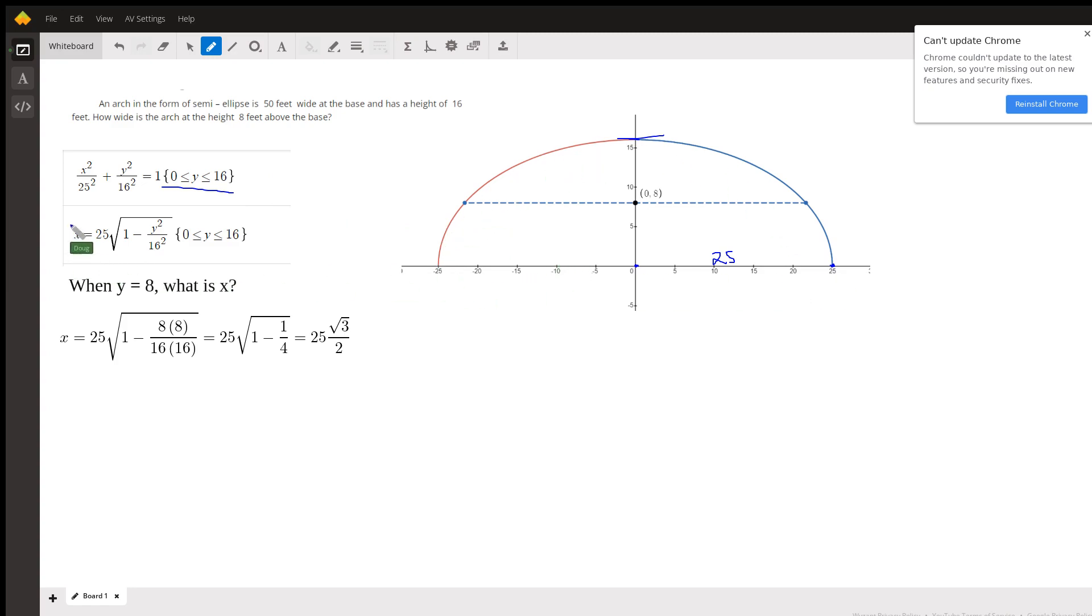If I solve this equation for x, taking the positive square root, I'll first subtract y squared over 16 squared from 1, multiply by 25 squared, and then take the square root. Square root of 25 squared, of course, is 25, and I have square root of 1 minus y squared over 16 squared.